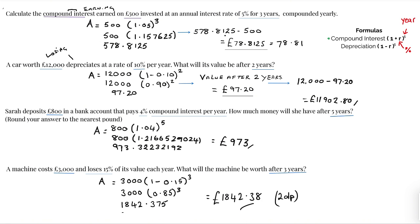The reason why we subtracted that is because it's asking how much compound interest was earned on 500 pounds, so it's just asking us how much has been on top of that 500 pound, which is 78.81.